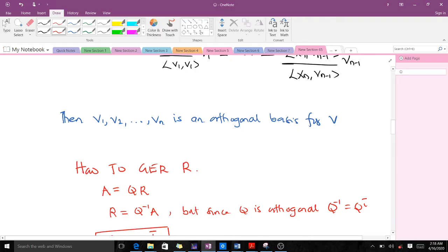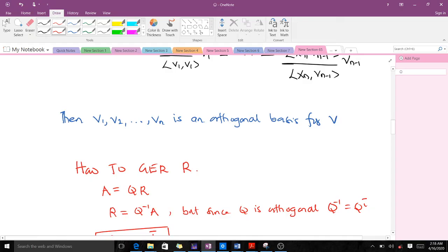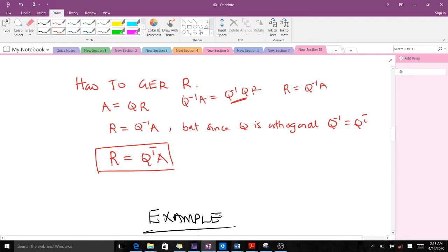How to get our R, our upper triangular matrix? You realize that we said A is equal to QR. So that means to get R, we pre-multiply both sides by Q inverse. When we do that, we have Q inverse A equal to Q inverse QR, and this gives us the identity element. So we have R equal to Q inverse A. But since Q is an orthogonal matrix, it implies that Q inverse is the same as Q transpose. Hence, our R is given by the formula Q transpose A.